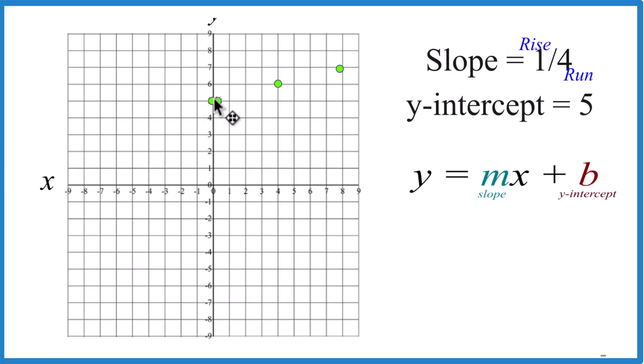We can even go in the opposite direction. We can go down 1 and to the left, 1, 2, 3, 4, and that's also on our line.